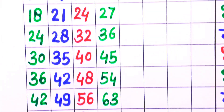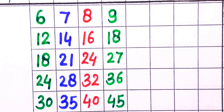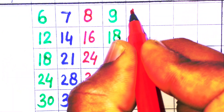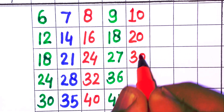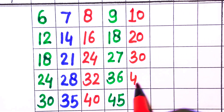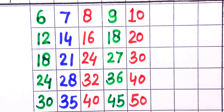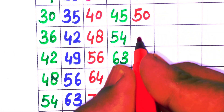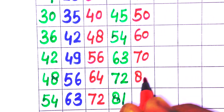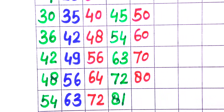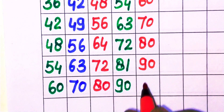10 × 1 = 10, 10 × 2 = 20, 10 × 3 = 30, 10 × 4 = 40, 10 × 5 = 50, 10 × 6 = 60, 10 × 7 = 70, 10 × 8 = 80, 10 × 9 = 90, 10 × 10 = 100.